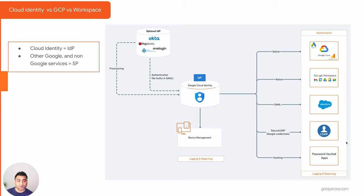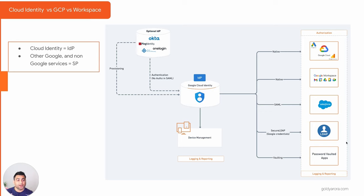You can also have a Google Cloud Identity license and a Google Workspace license working together. For example, if you have a contractor who does not need access to Gmail, Google Chat, Drive, etc., and just needs to access some applications configured as services in your Google Cloud Identity console — say Salesforce where Google is acting as IdP and Salesforce as the service provider — instead of purchasing a Google Workspace license you can give that contractor a Google Cloud Identity license, which will be much cheaper.